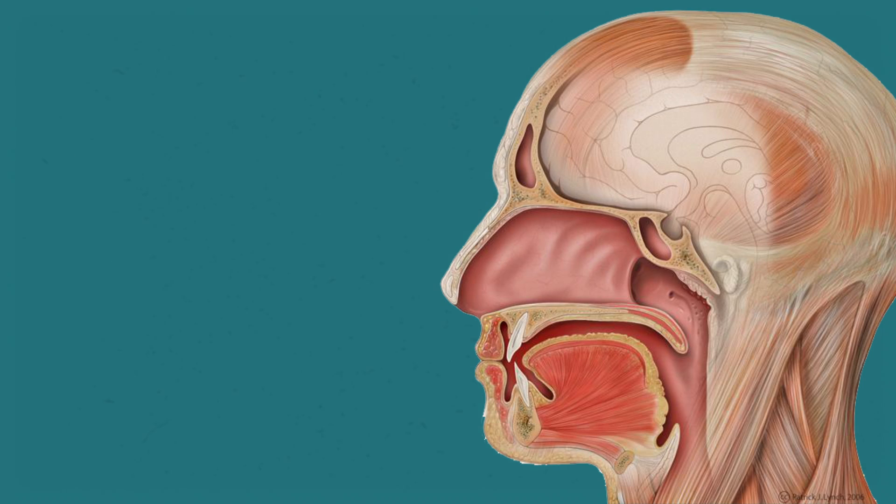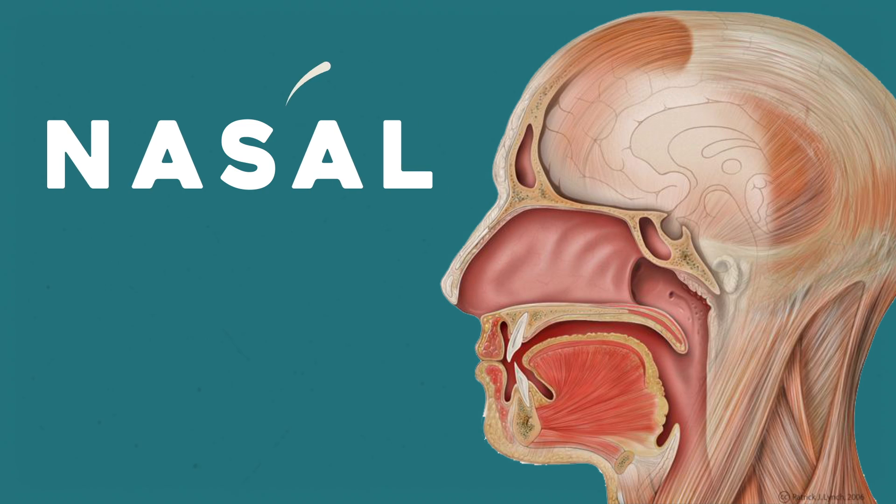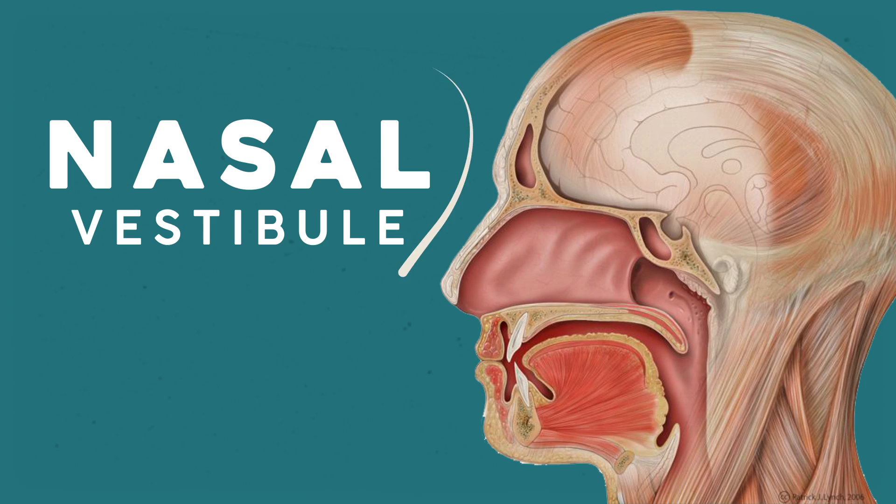I mention those two zones because that context makes our study of histology much easier. The conducting zone will be lined with epithelium to make a smooth, clean path for air to travel through, while the respiratory zone is going to be more thin and porous so that molecules of gas can escape. Let's start up top at the nasal vestibules, less than an inch behind the nostrils.